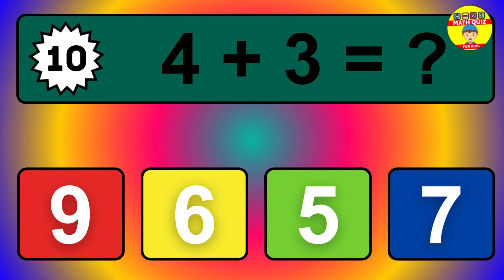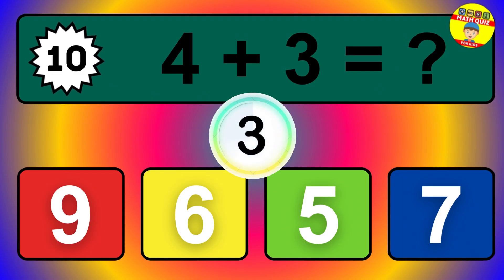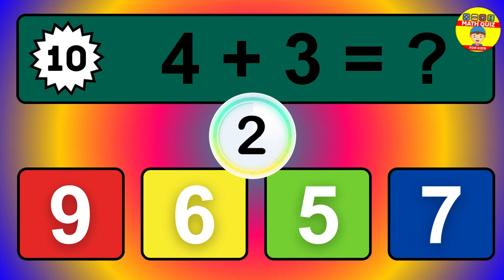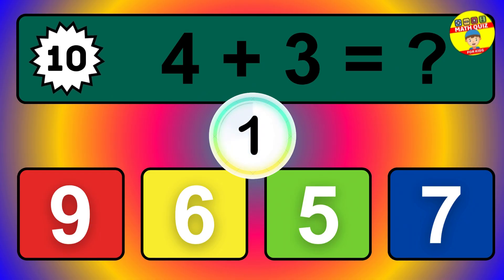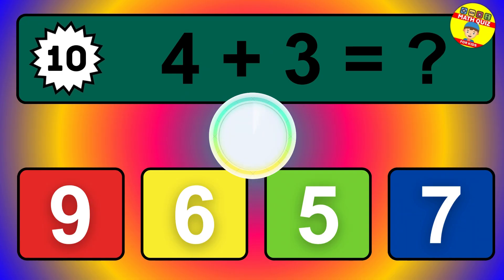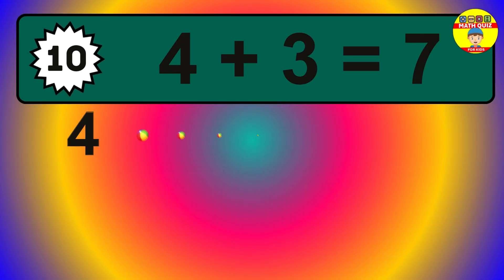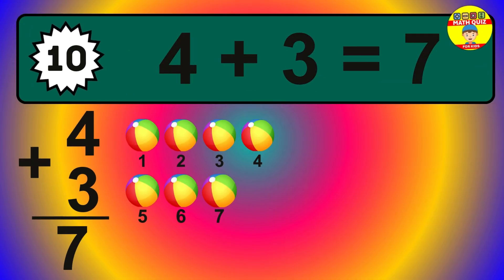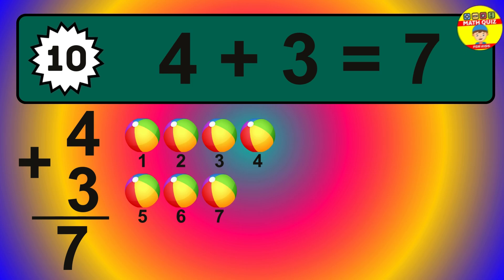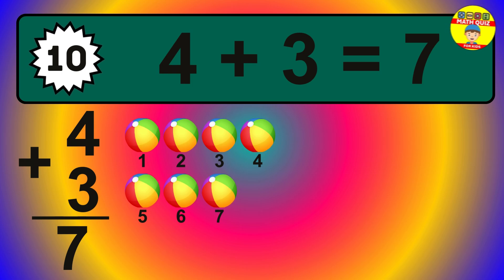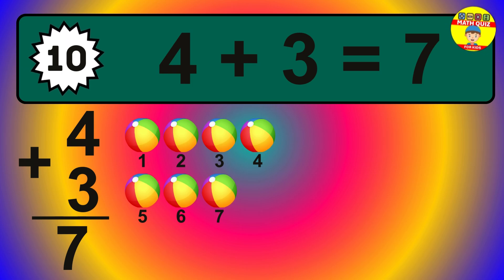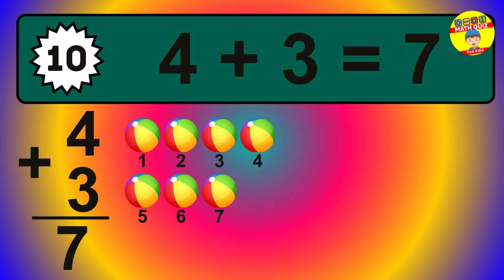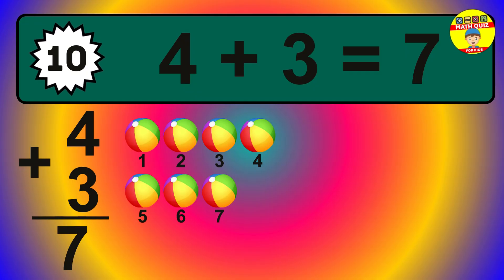Question 10. 4 plus 3 equals what? So the answer is 4 plus 3 is 7. Let's count it: 1, 2, 3, 4, 5, 6, 7.